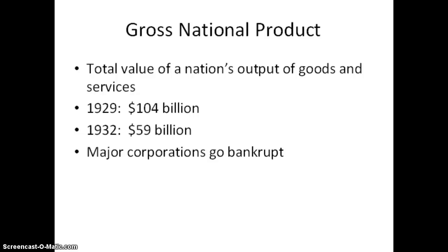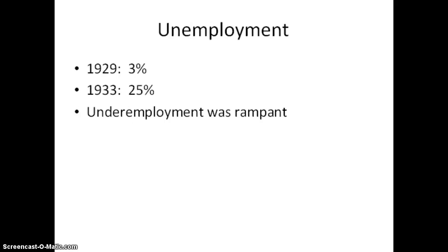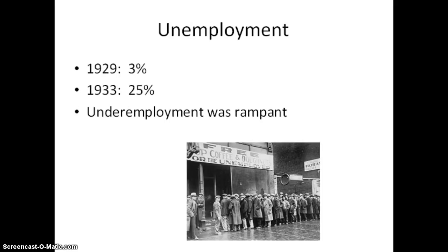Many corporations went bankrupt as a result of these economic pressures. In 1929, about 1.6 million workers were unemployed — that's 3%. By 1933, there were 13 million workers unemployed, up to 25%. Workers who did keep their jobs often had to take pay cuts and reduced hours. This is known as underemployment.